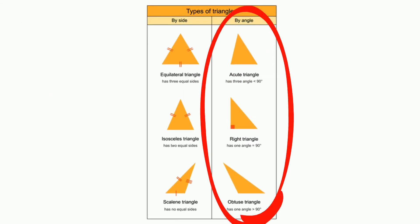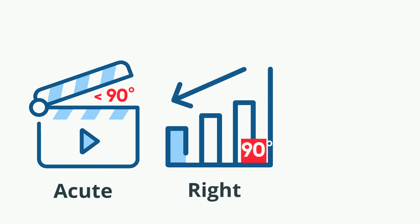Triangles can also be classified by their angles. There are three angles that are often associated with triangles. Acute angles are less than 90 degrees, right angles are exactly 90 degrees, and obtuse angles are greater than 90 degrees.